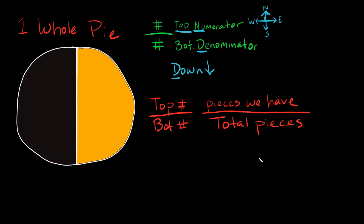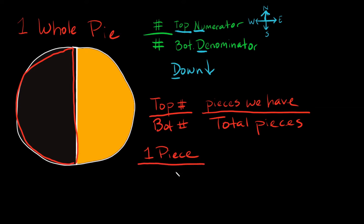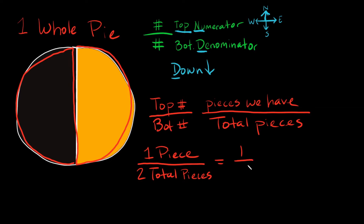So how much of the pie did I eat? I ate one piece, and we put that over the total number of pieces. There are two total pieces, and notice the pieces are of equal size — that's very important. So I ate one piece out of two: one over two, or one half of the pie.